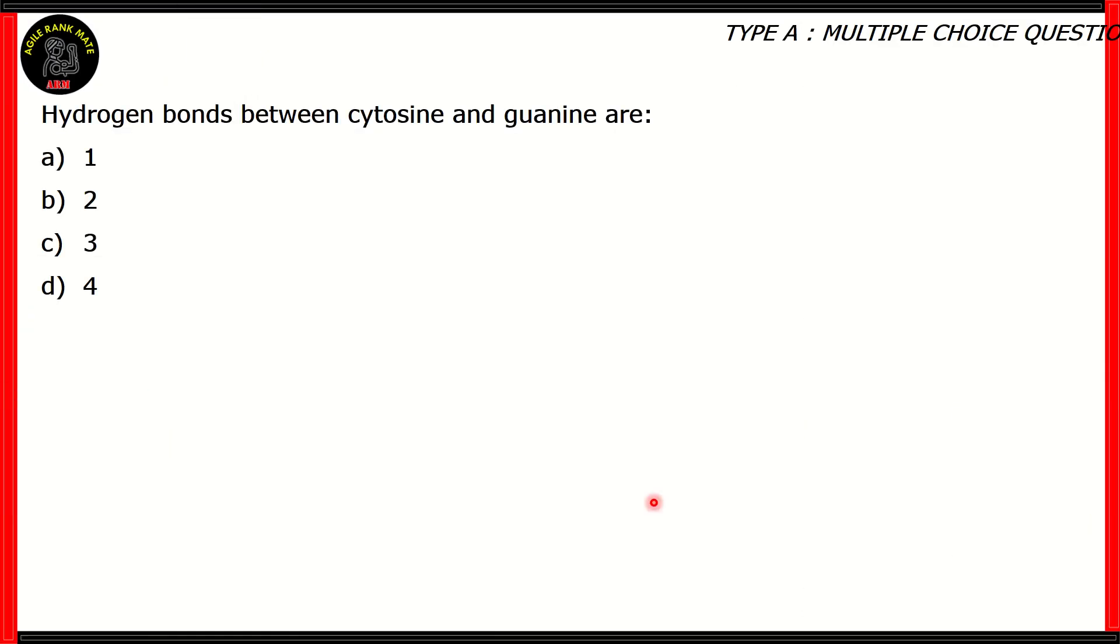Let's start off with our first question of biology. The hydrogen bonds between cytosine and guanine are... In case you're wondering what this is, cytosine and guanine are two of the four nitrogen bases. There are four nitrogen bases. Cytosine and guanine are two of them. The other two are adenine and thymine. The arrangement of these nitrogen bases in DNA or RNA has this particular format. Adenine always bonds with thymine and cytosine always bonds with guanine.